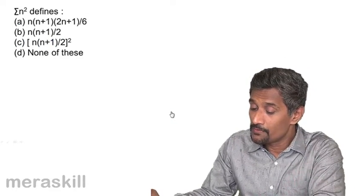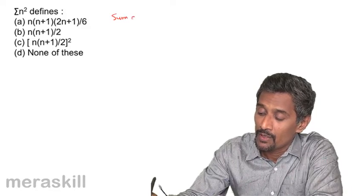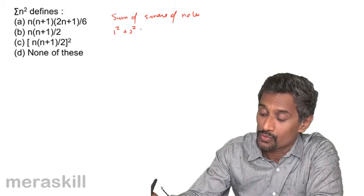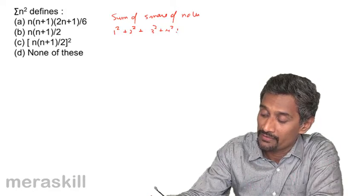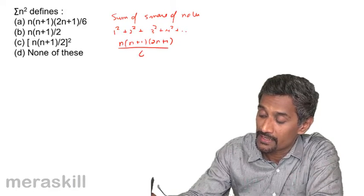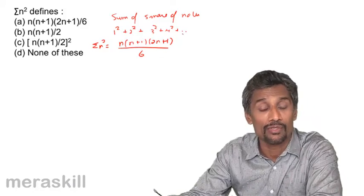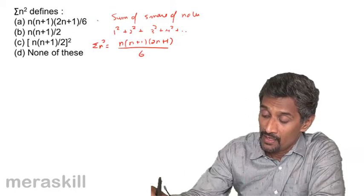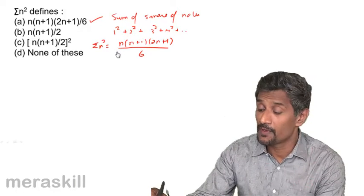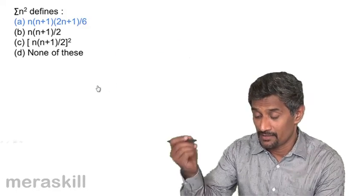The sum of n squares — that is the sum of squares of natural numbers — means 1² + 2² + 3² + 4² and so on, which is nothing but n(n+1)(2n+1)/6. So the sum of squares of the first n natural numbers is n(n+1)(2n+1)/6.